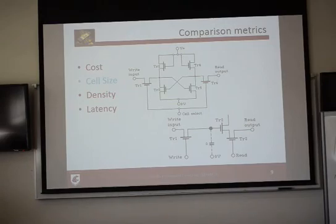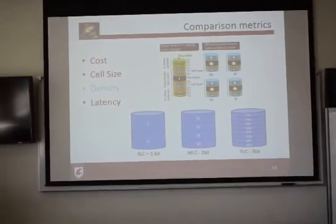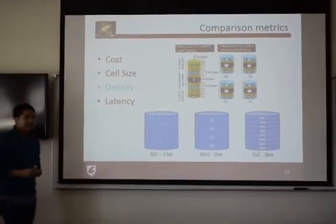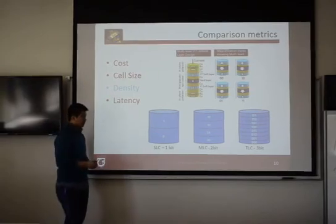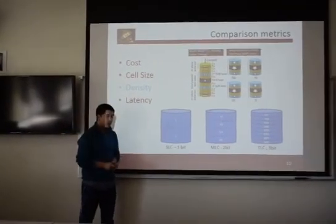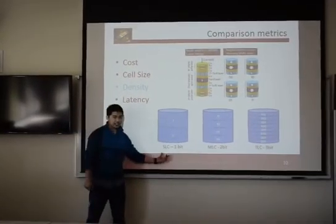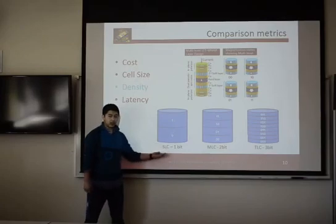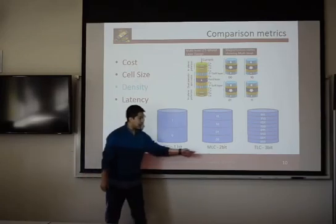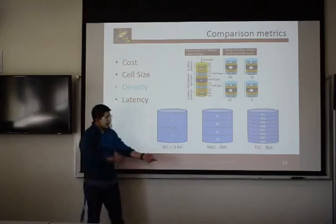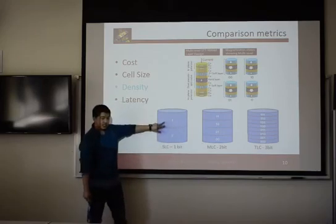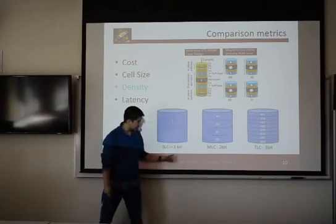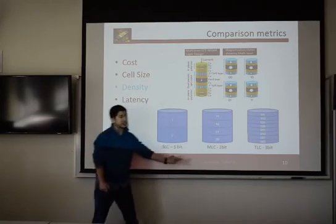The next comparison metric is density, which I'm defining as how many bits you can store in one cell. For example, in flash you've probably heard of SLC — single-level cell — and MLC — multi-level cell. That simply means one cell can have two states or four states, depending on whether you're using SLC or MLC.